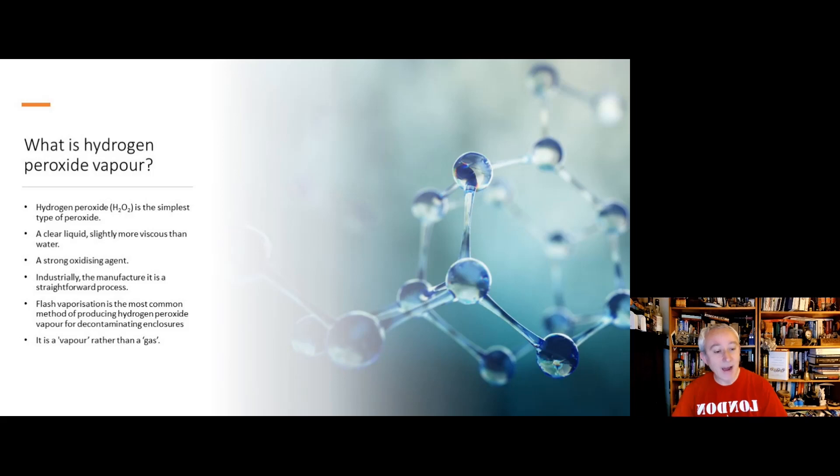It's manufactured from anthracene by bubbling compressed air, where you can create this simple oxygen to oxygen hydrogen arrangement. It's used to decontaminate by a process called flash evaporation, which is where liquid hydrogen peroxide hits a hot plate and you generate vapor.